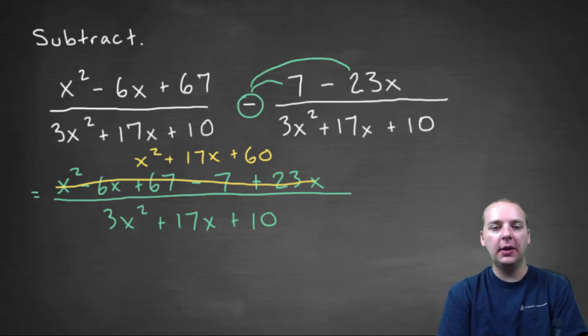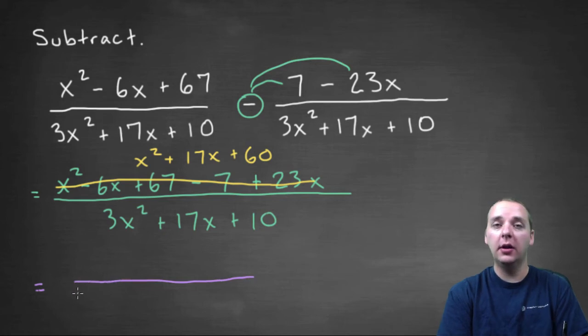So let's do one more step, and again I'll change colors, just so we keep everything straight. Let's try to factor the numerator and denominator, and if we're lucky, hopefully one of these will factor, and possibly cancel with another factor.